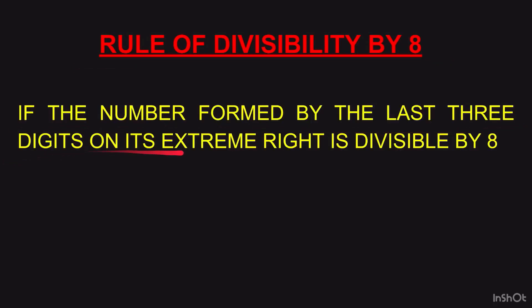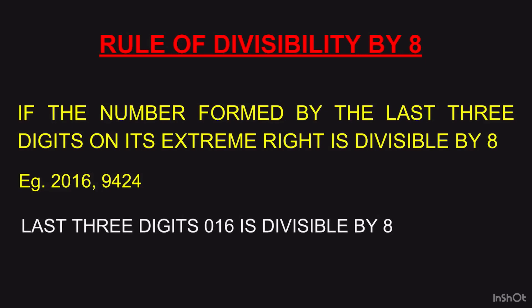We don't have a rule for 7, so we go directly to the rule of divisibility by 8. If the number formed by the last 3 digits is divisible by 8, then the number is divisible by 8. Example: 2016 — last three digits are 016, which is 16, and 16 is divisible by 8 (8 twos are 16), so 2016 is divisible by 8. Similarly, check 9424: take the last three digits 424, divide by 8 — if remainder is 0, then 9424 is also divisible by 8. Please check and let me know in the comments.